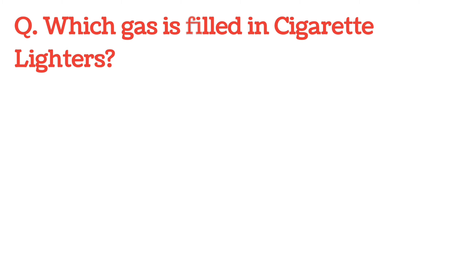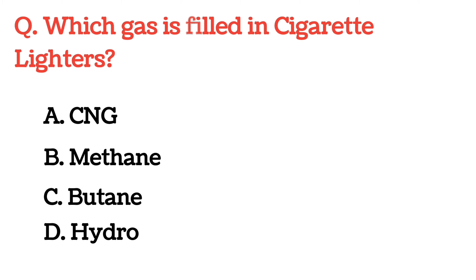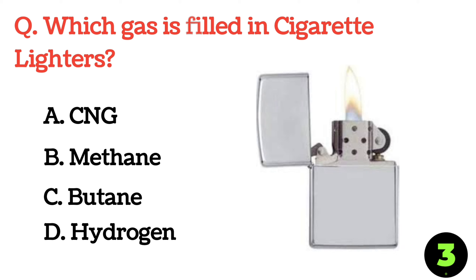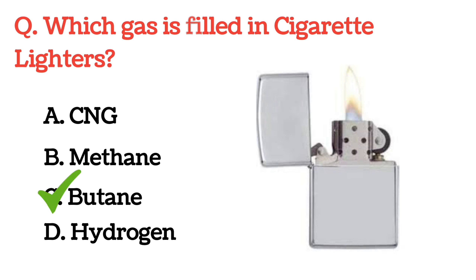Which gas is filled in cigarette lighters? The correct answer is Option C: Butane.